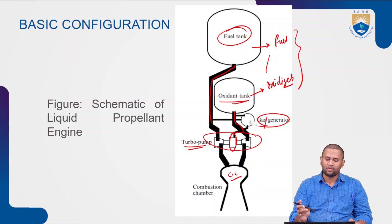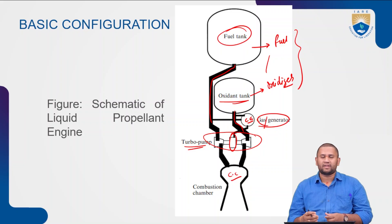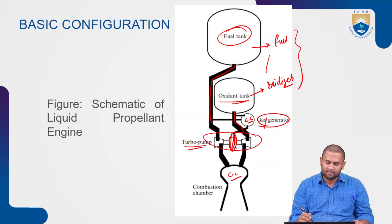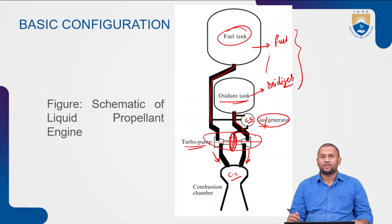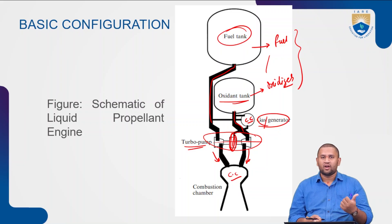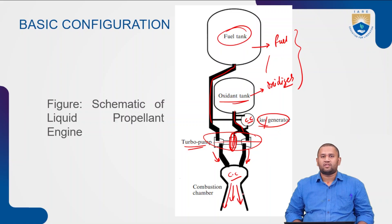Some part of the oxidizer and fuel is taken from the main line and burnt in the gas generator — a small combustion chamber at lower pressures and minimal volumes. This creates a small jet of gases passed to the turbine to drive the two coaxial pumps. As the pumps rotate, they push the propellant towards the main combustion chamber, where the oxidizer and fuel burn together, and the combustion gases are expanded through the nozzle.